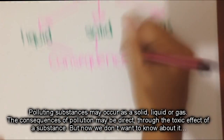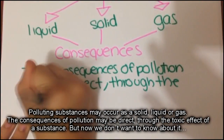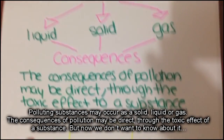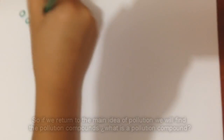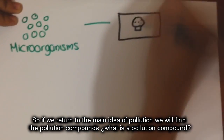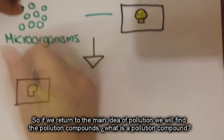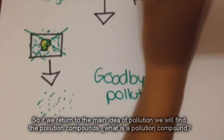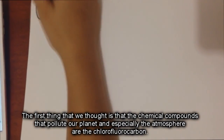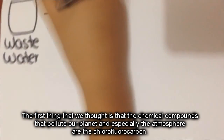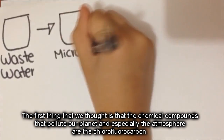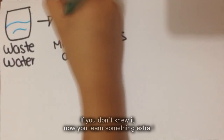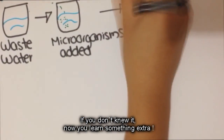The consequence of pollution may be direct through the toxic effect of a substance. Returning to the main idea of pollution, we find pollution compounds. The chemical compounds that pollute our planet, and especially the atmosphere, are the chlorofluorocarbons. If you didn't know that, now you have learned something extra.